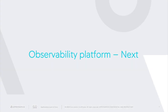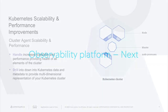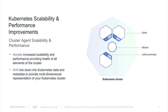I want to talk about what we're introducing in our full observability platform going forward. Number one, we're introducing Kubernetes scalability and performance improvements. With the additional scale and performance that our cluster agent is now able to support, we're able to handle increased scalability, providing the health of all elements of your cluster, and drill down into Kubernetes data and metadata to provide multidimensional representations of your Kubernetes cluster.